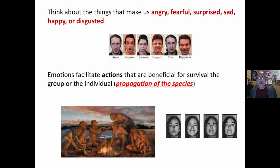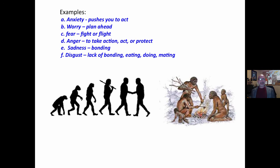We are hardwired to do certain things, to not get eaten, to run, to be angry, to have relationships. For example, anxiety pushes you to act, worry invites you to plan ahead.